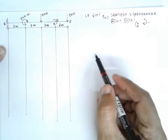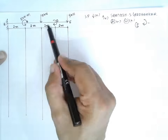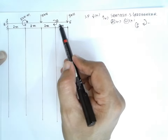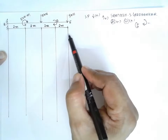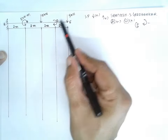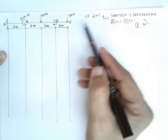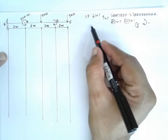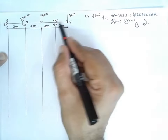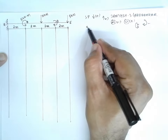The problem already has a point load and a couple. If a UDL were present, you would need to convert it into a point load first. Now I will proceed with calculating the shear force.